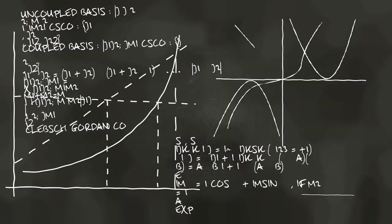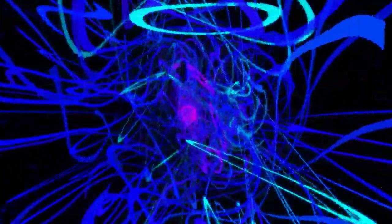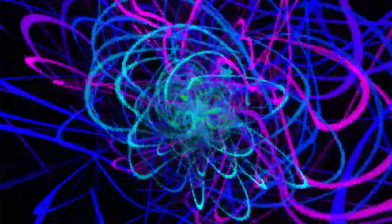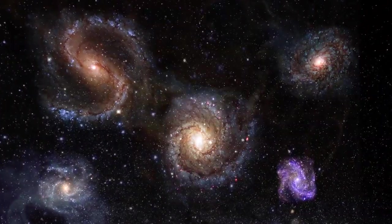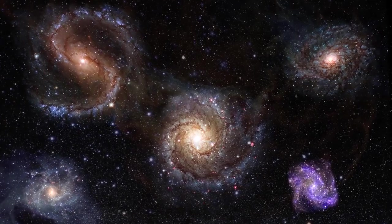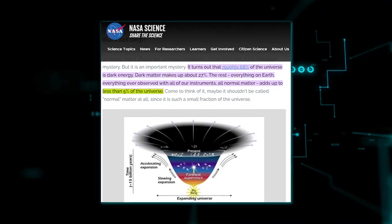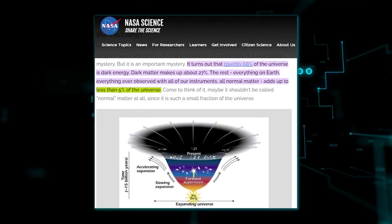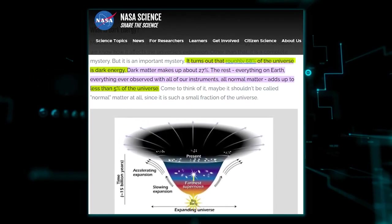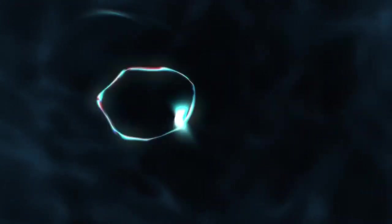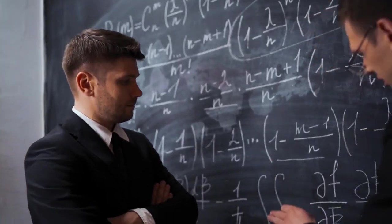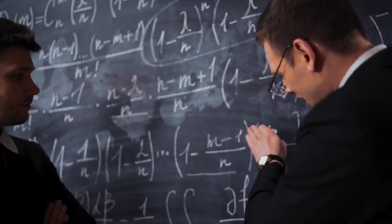String theory on the other hand has had its share of issues, one of which being dark energy. The problem is that whereas regular observable matter, the substance that string theory attempts to explain, accounts for only five percent of the cosmos, dark energy accounts for 68 percent, and most string theory models are incapable of explaining this. However, there have lately been several attempts to include dark energy into string theory.